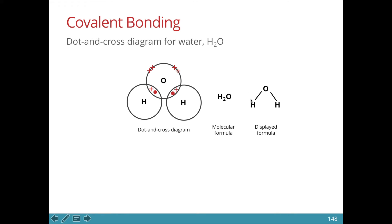We can represent the bonding using a displayed formula where a single line represents the shared pair of electrons. So each line represents two electrons. In this water molecule, there are four electrons being shared because there are two lines. Notice it is not necessary for all the valence electrons to be involved in bonding — four of oxygen's valence electrons are not involved in bonding.